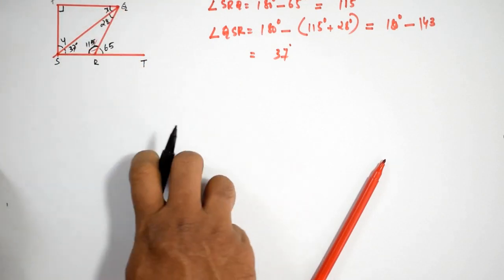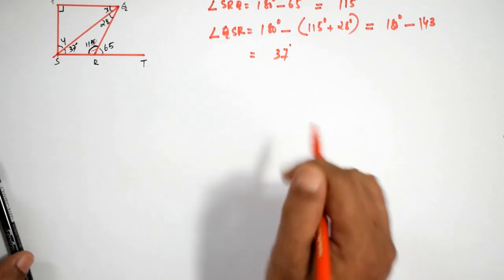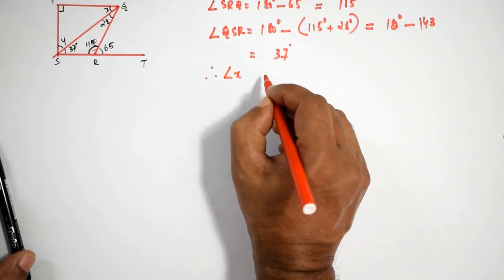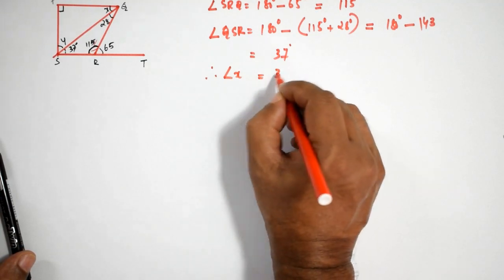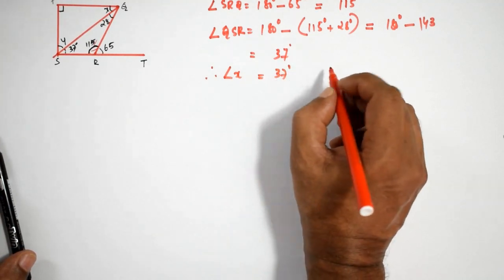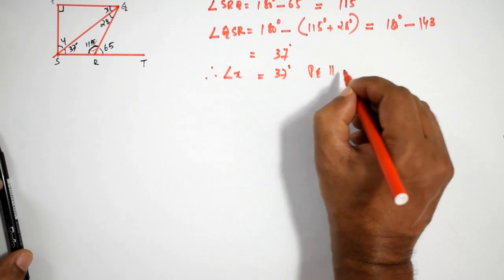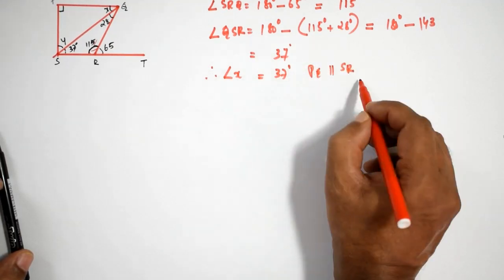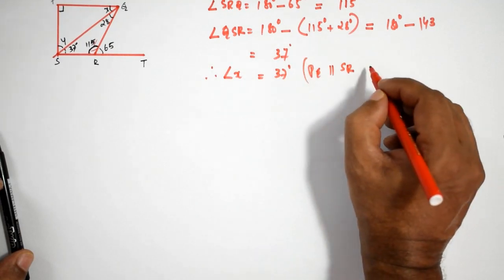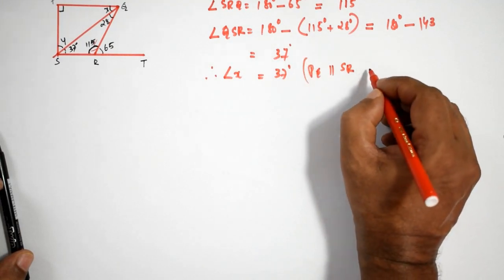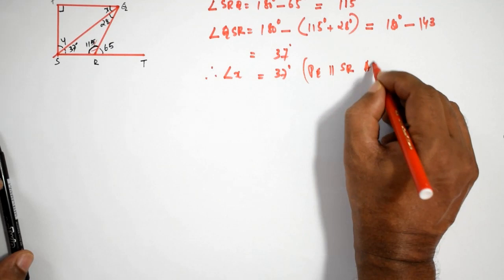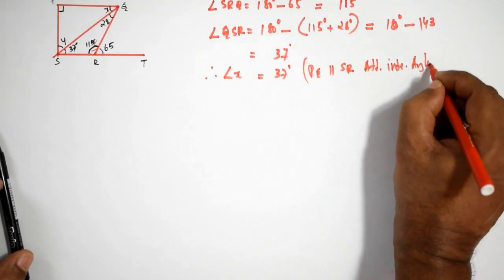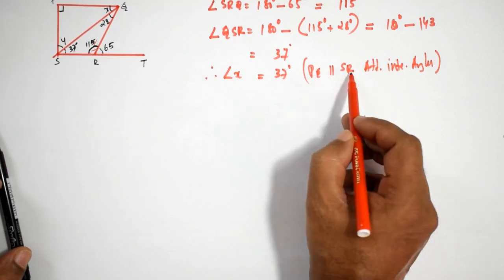Therefore, angle x is equal to 37 degrees. Since PQ is parallel to SR, angle x and angle QSR are alternate interior angles. Therefore x equals 37 degrees.